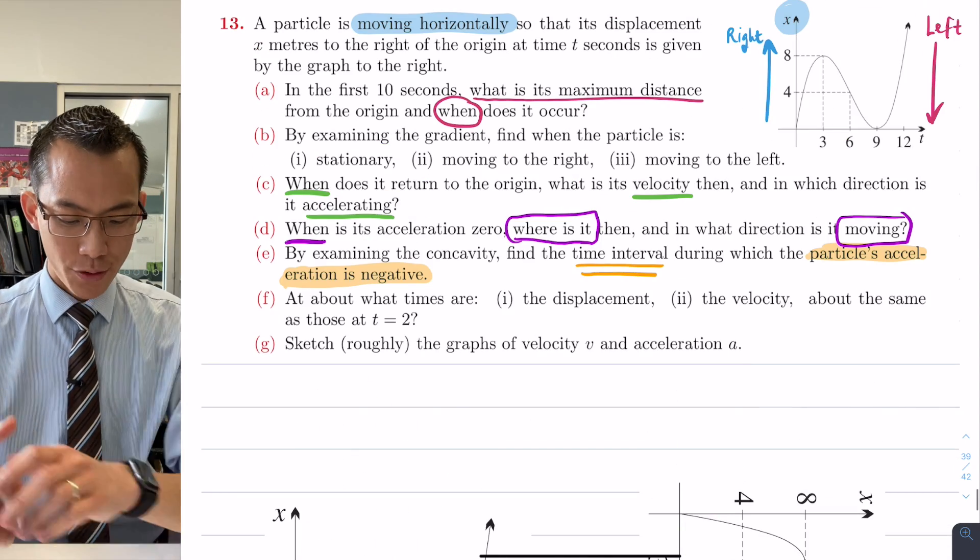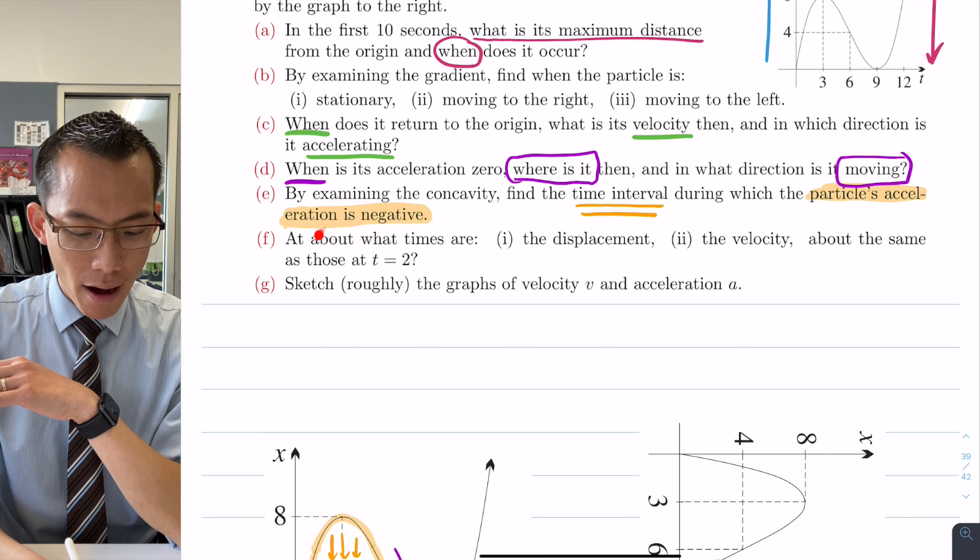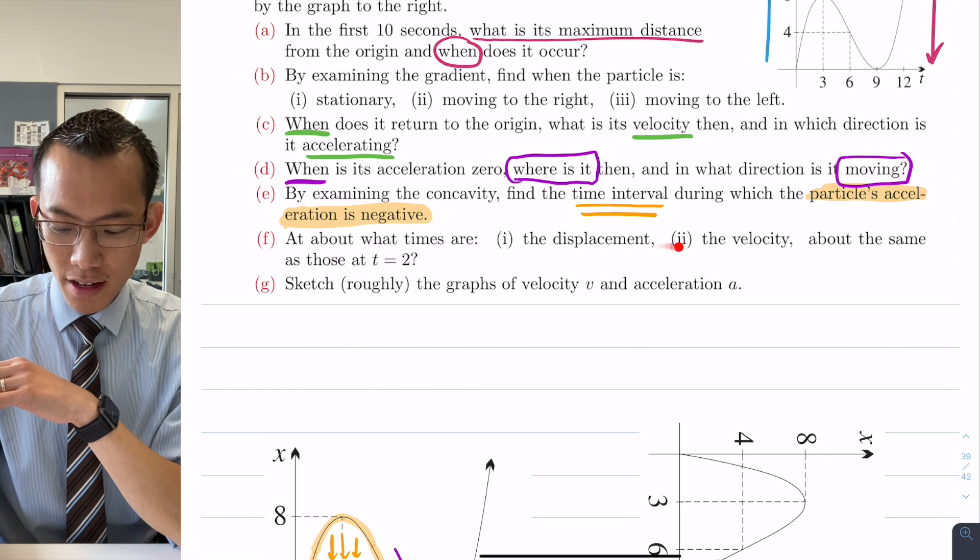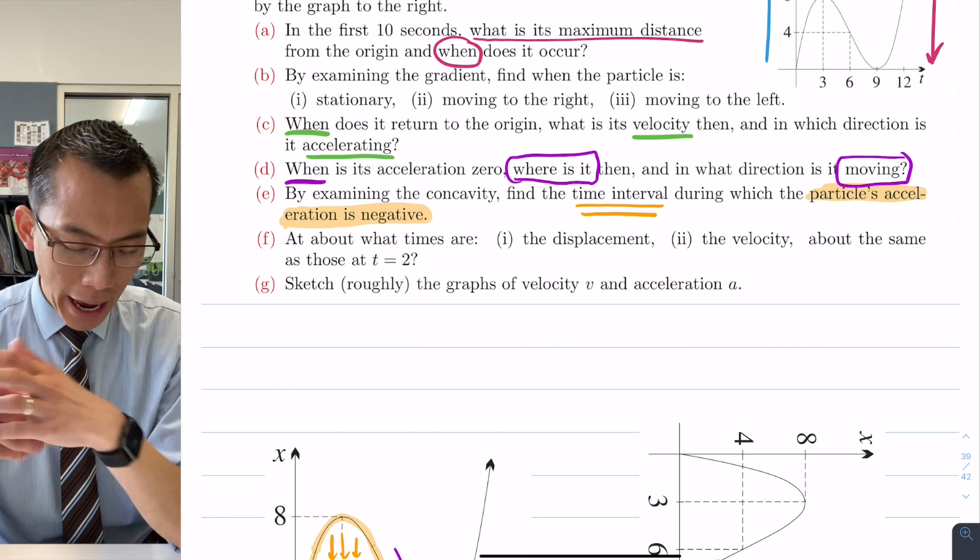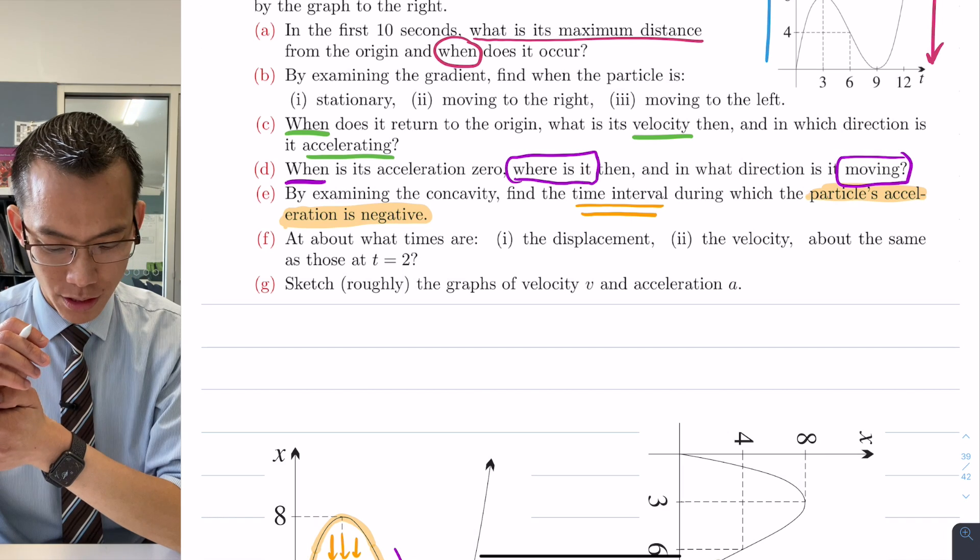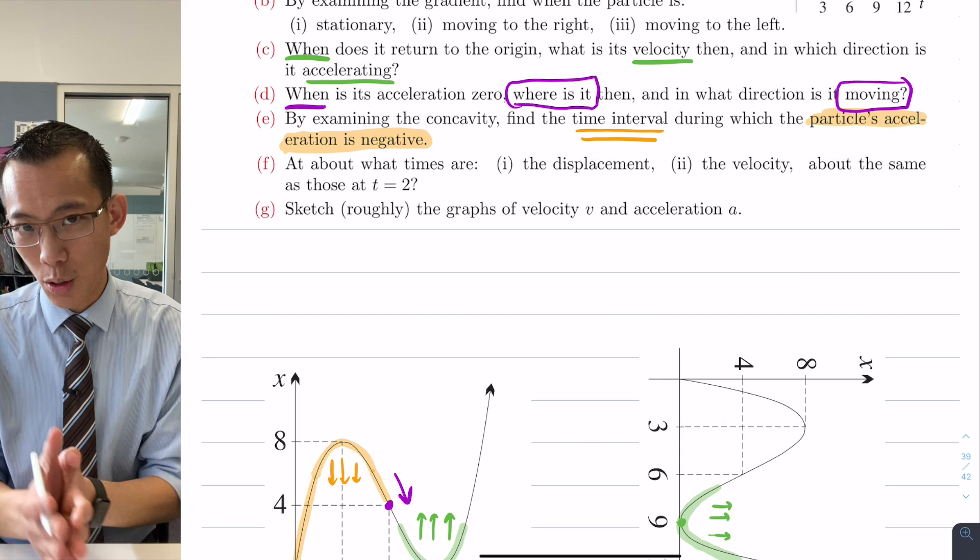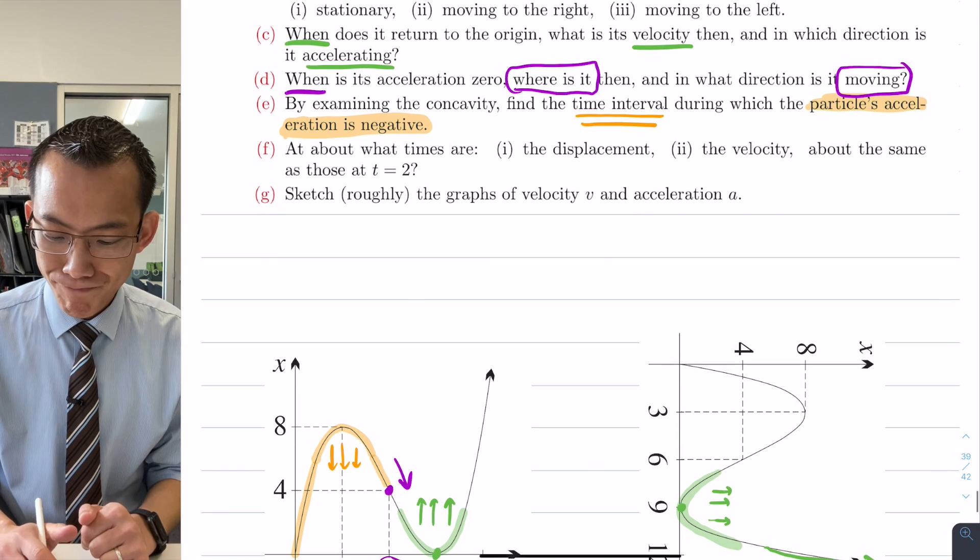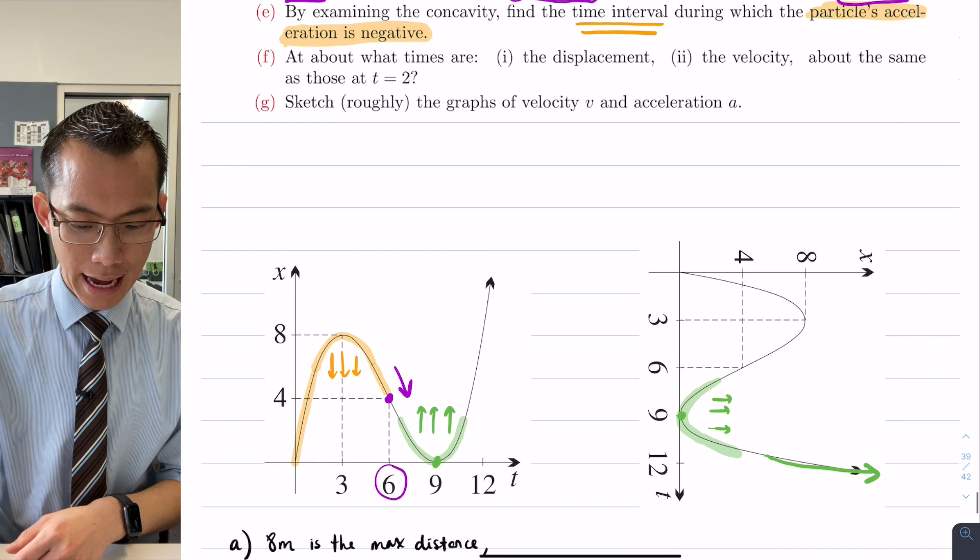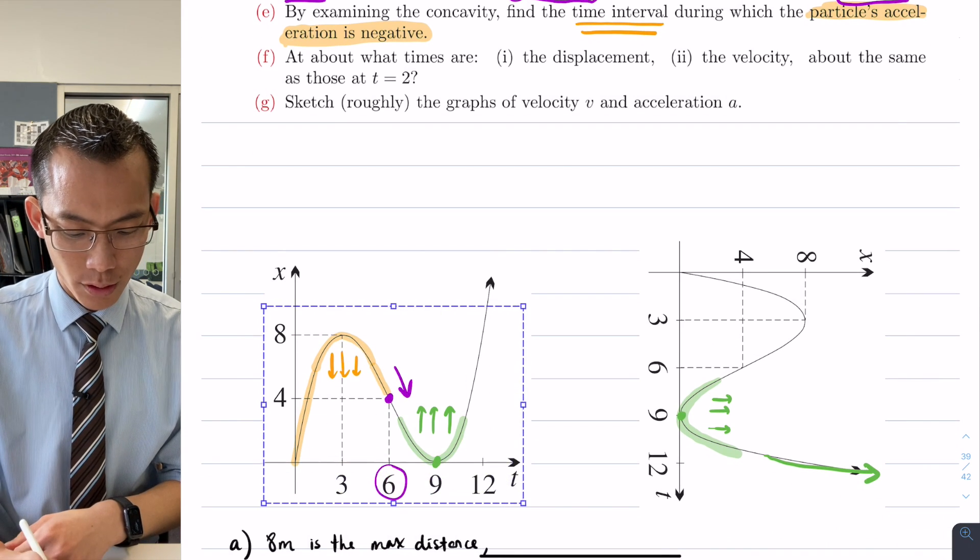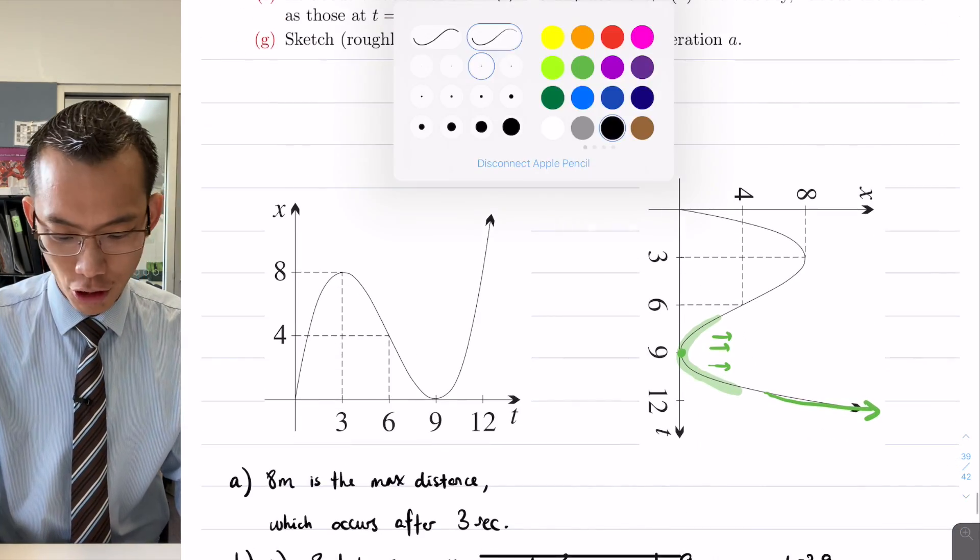Alright, so we're really on the home stretch now. We've just done part E, so part F says at about what times are the displacement, the velocity, about the same as those at time 2. So we have to say this approximately because we're going to be doing some rough reading of the graph and like we said before we don't have equations so we can't solve this precisely, we just have to eyeball it.